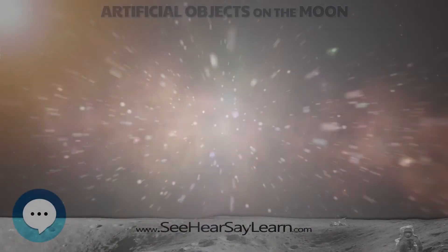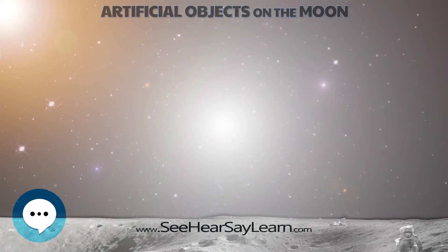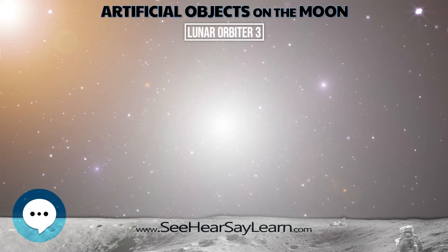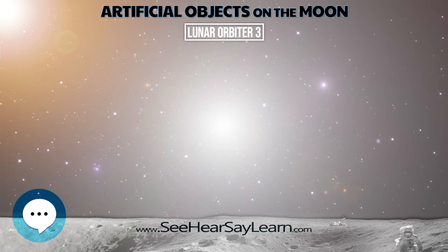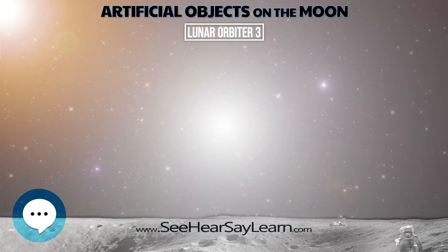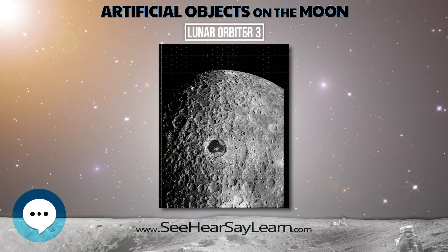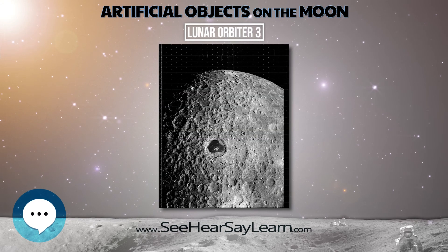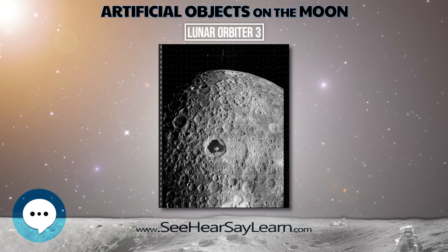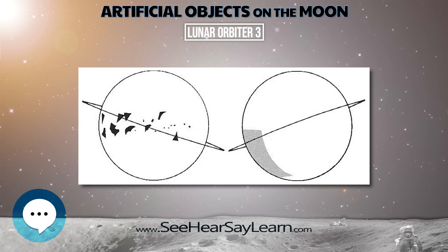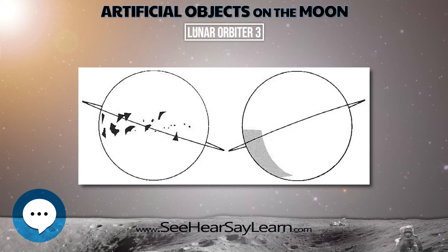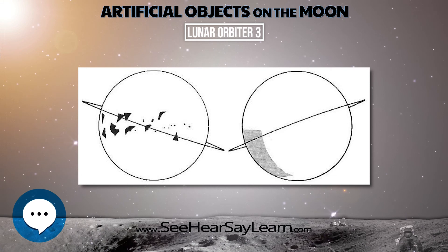Lunar Orbiter 3 was a spacecraft launched by NASA in 1967 as part of the Lunar Orbiter program. It was designed primarily to photograph areas of the lunar surface for confirmation of safe landing sites for the Surveyor and Apollo missions.